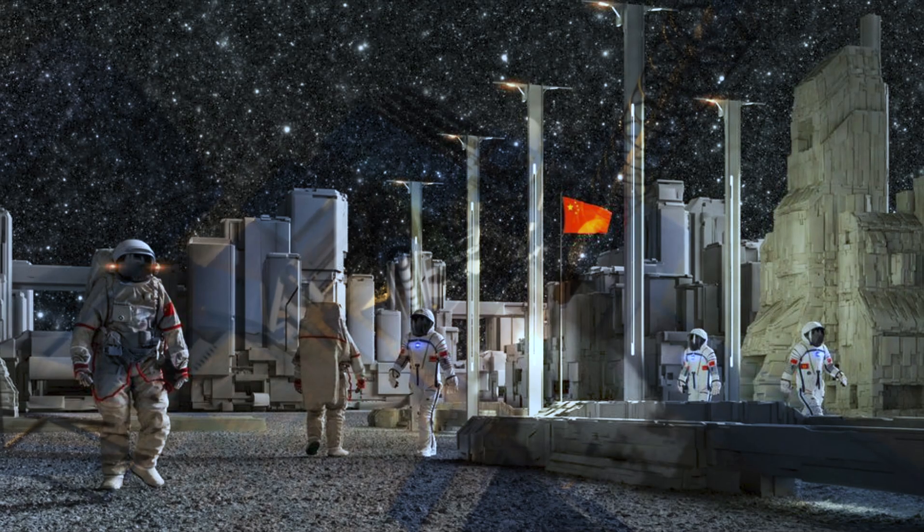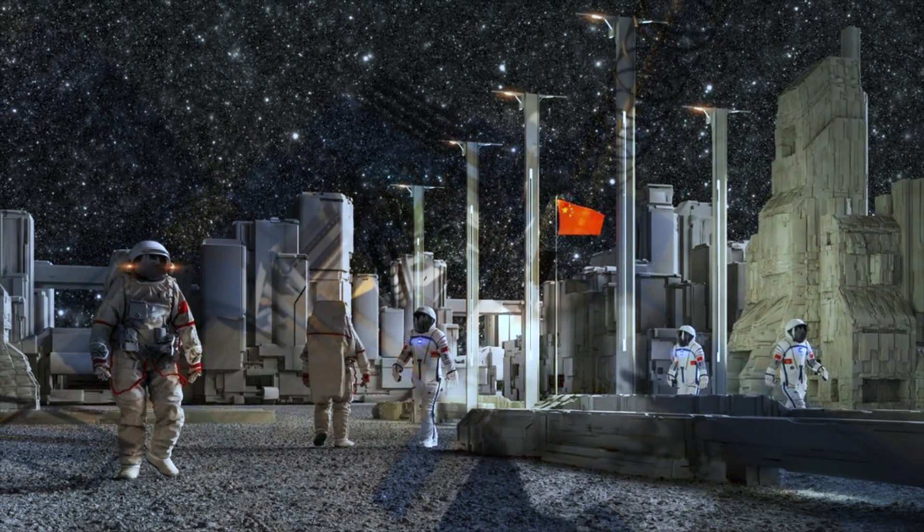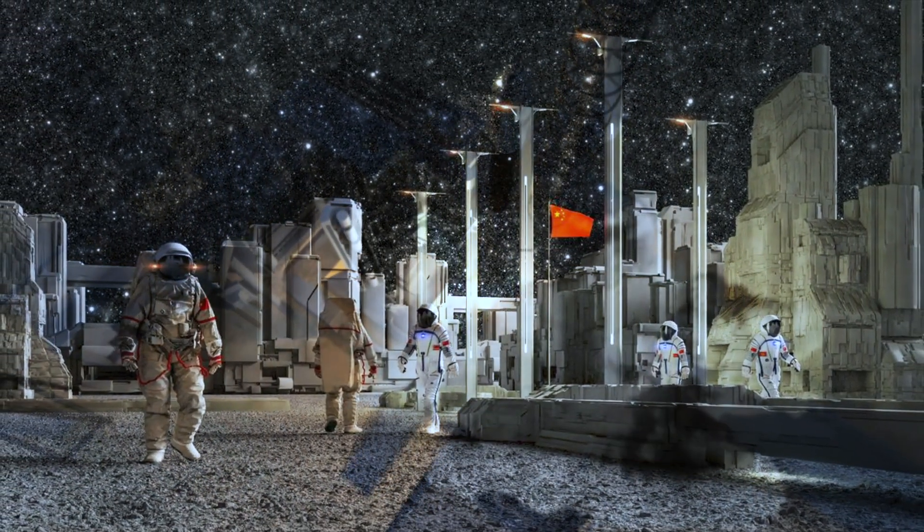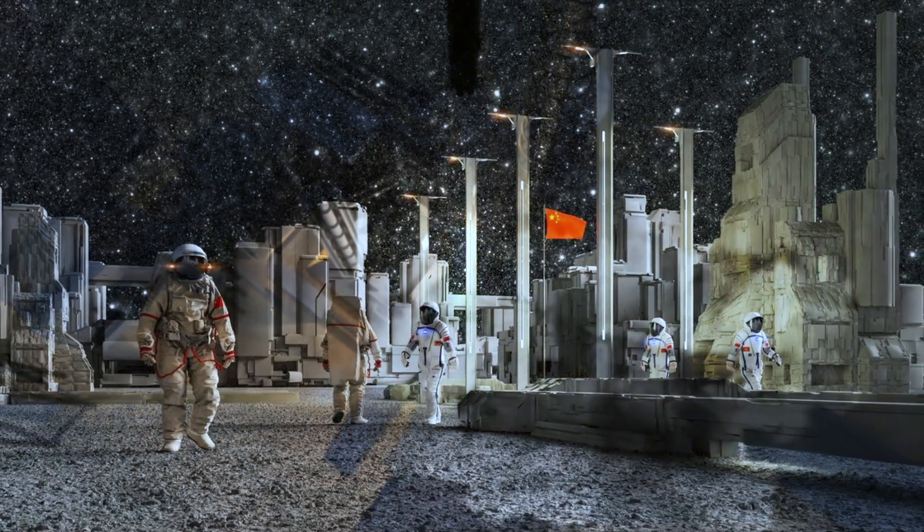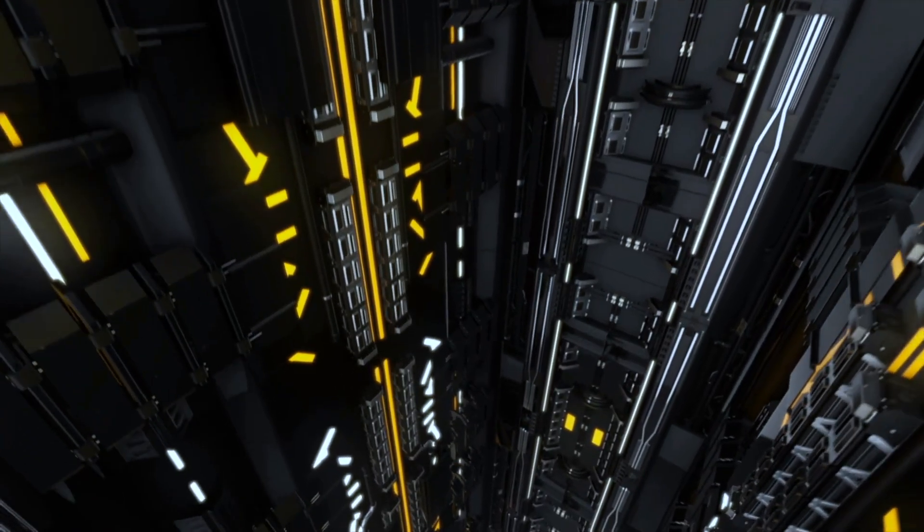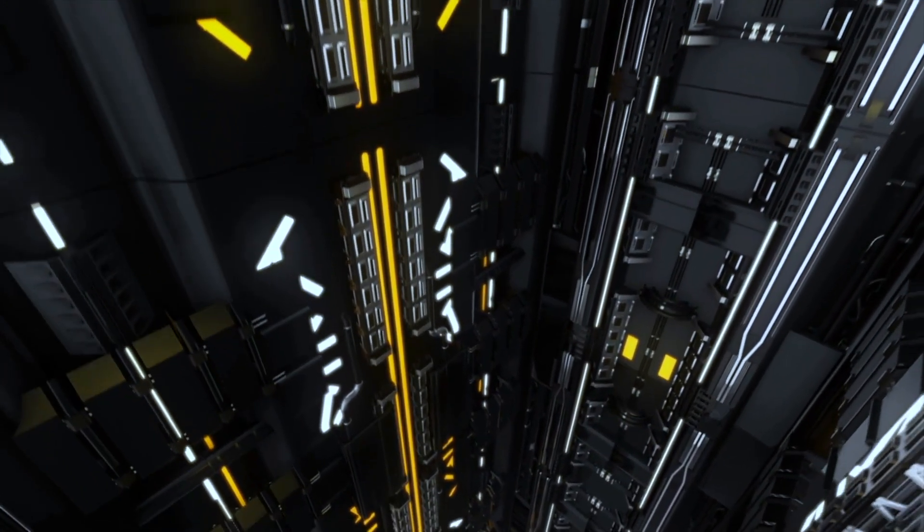The composition of the lunar soil, or regolith, presents another obstacle to establishing a thriving lunar settlement. Devoid of the essential nutrients required for plant growth, the regolith must be extensively studied and potentially supplemented to support the cultivation of food crops.